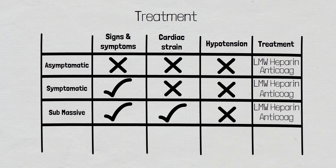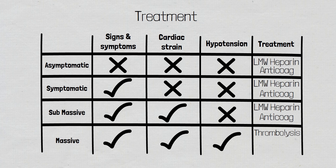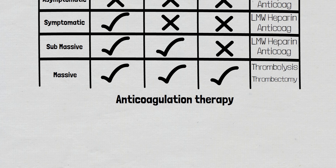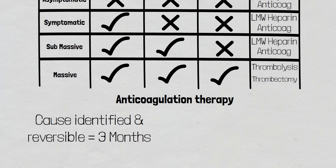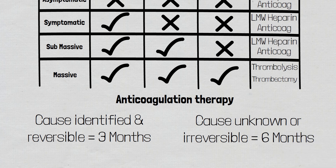The final category is a massive pulmonary embolism. These patients need management in an intensive care unit. They are symptomatic, have signs of cardiac strain and are haemodynamically compromised. They are treated with a thrombolytic agent such as a tissue plasminogen activator to destroy the clot, which may include streptokinase or tenecteplase, and may need thrombectomy — the surgical removal of a clot. Anticoagulation is normally continued for three months if there is a reversible cause, or six months if the cause is unclear, irreversible, or the patient has cancer.